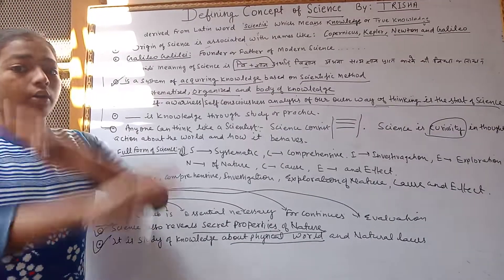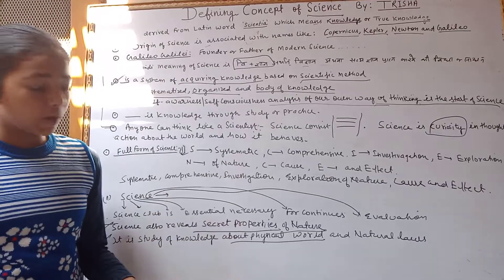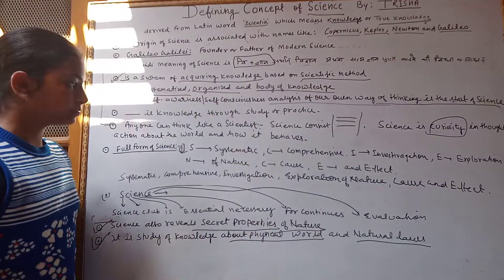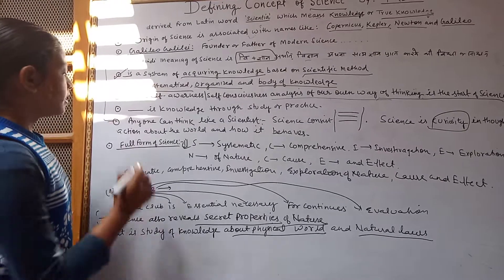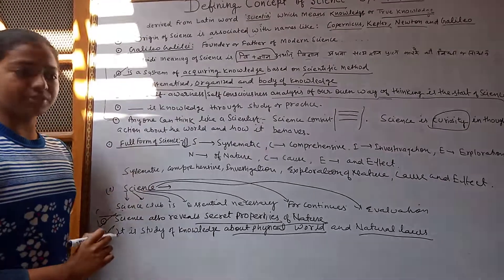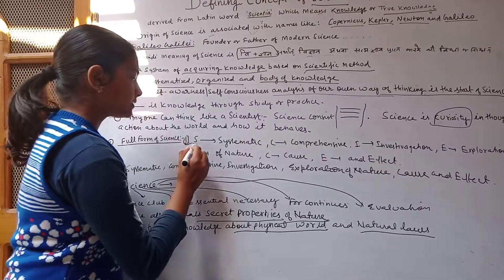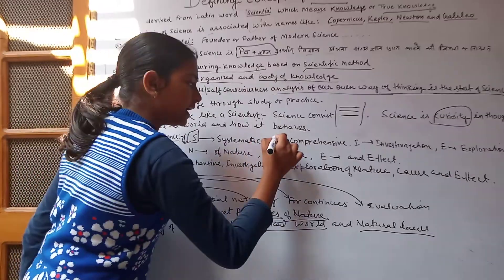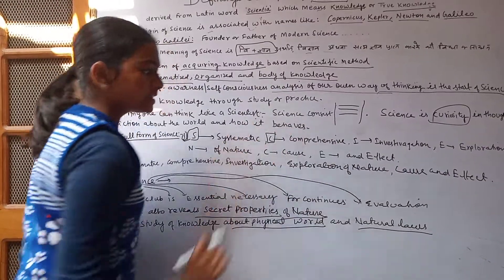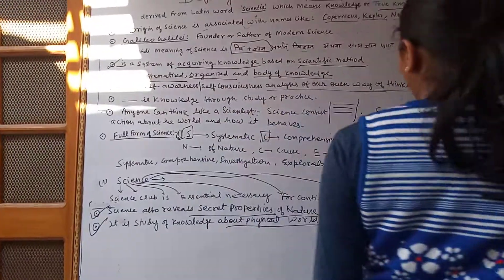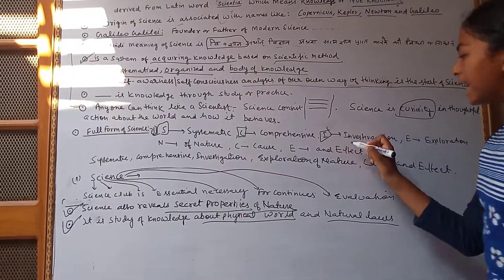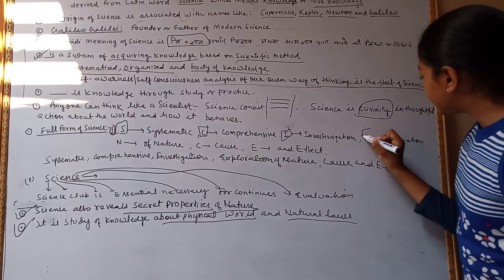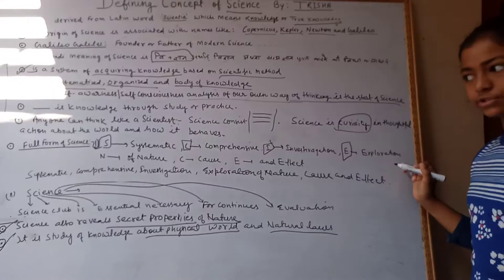It is the study of the physical world and the natural laws. The word SCIRE stands for: S — Systematic, C — Comprehensive, I — Investigation, R — stands for... and E — Explorations.